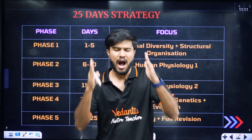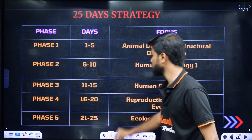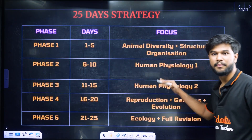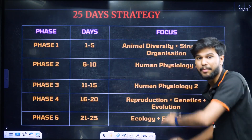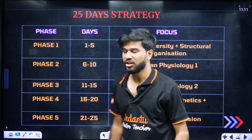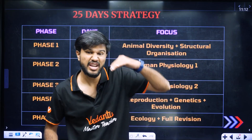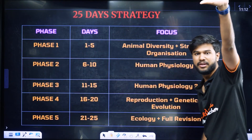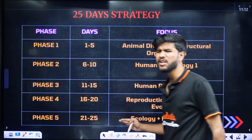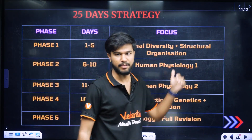This is how you can learn systematically. You can finish one phase at a time. In phase 3, you will learn human physiology part 2. In the last phase, you can do pre-work and cover ECO — we will cover the ecology topics.